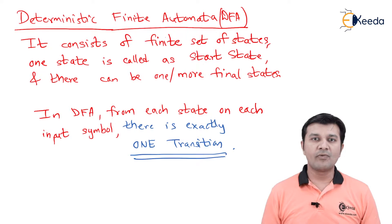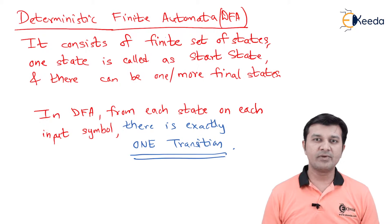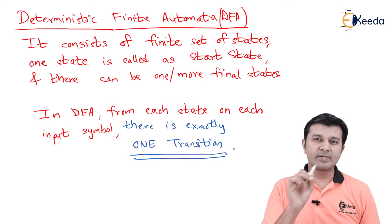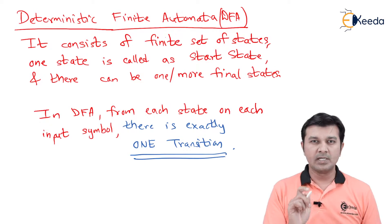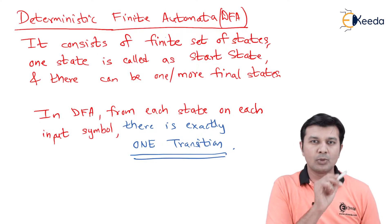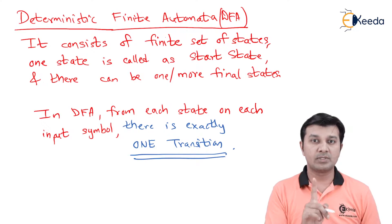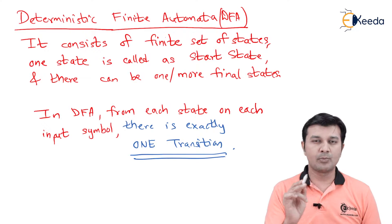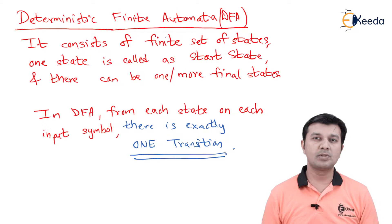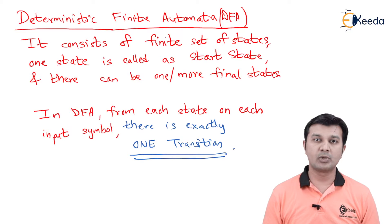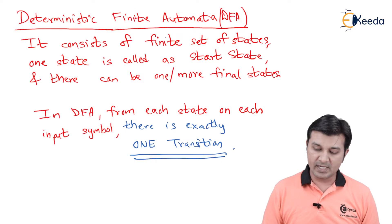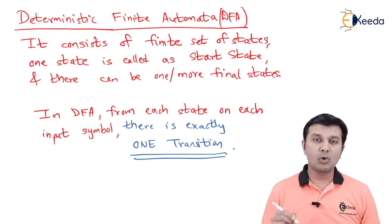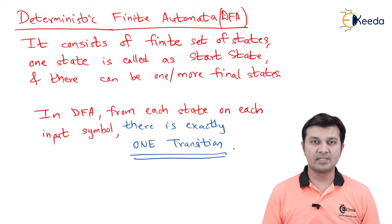We have studied a lot of finite state machines and finite automata. Everywhere we saw that Q on receiving some input goes to one state, and Q on receiving some other input goes to another state — always a single state. Similarly Q0 or Q1 on receiving inputs go to distinct states, and my DFA works the same way. In DFA, from each state on each input symbol, there is exactly one transition.